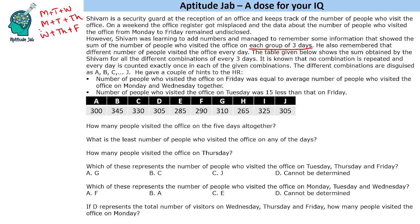He just gave a couple of hints: the number of people who visited the office on Friday was equal to the average number of people who visited on Monday and Wednesday altogether, and the number of people who visited on Tuesday was 15 less than that on Friday. First of all, how many combinations are there? There are 10, because we have 5 days and we need to pick a combination of 3, so 5C3 is 10.